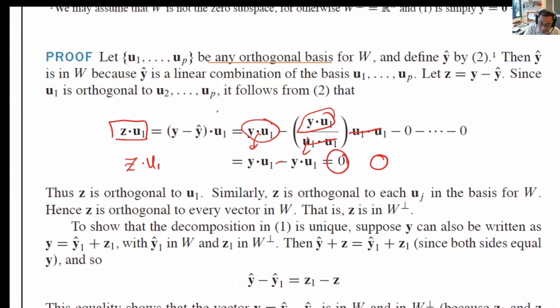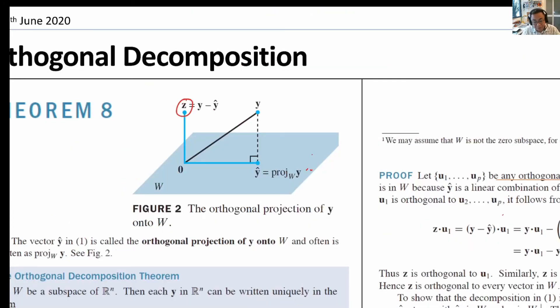You repeat this for all uj, j equals 1 to p. And we will realize that z is orthogonal to all uj, for j equals 1 to p. It shows us that z is in the orthogonal space of w. This result is very satisfying. It means that whatever z left cannot be explained by any vectors in w.